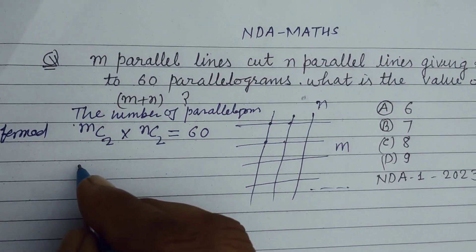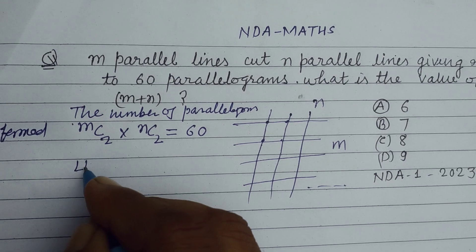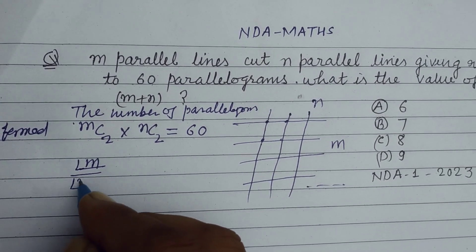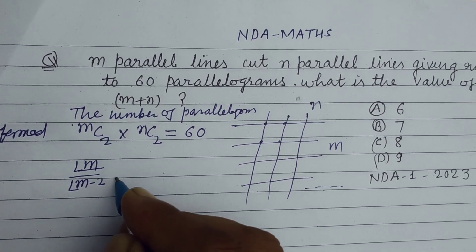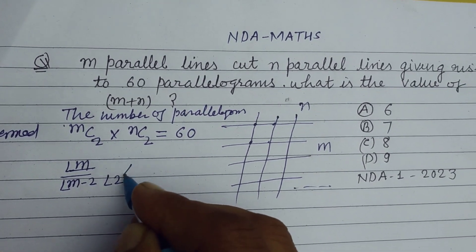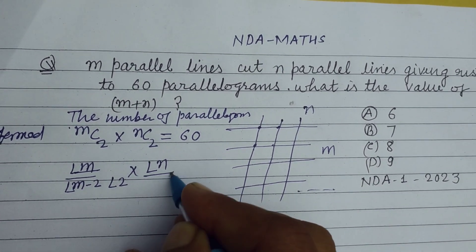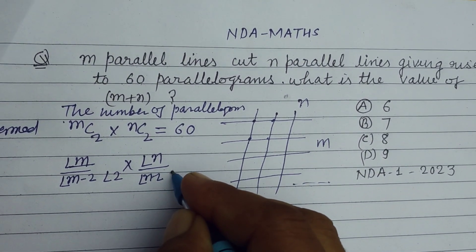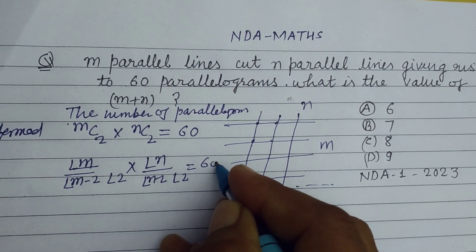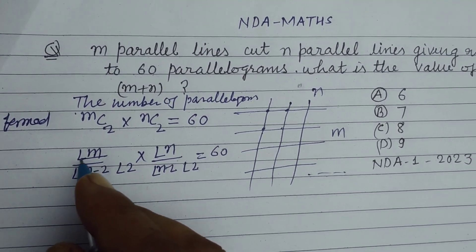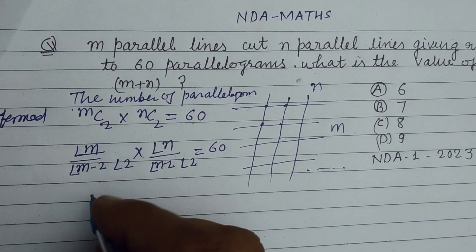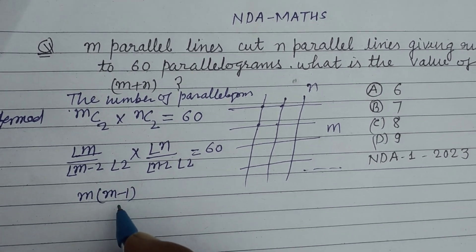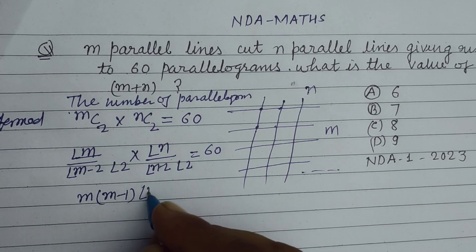This will be m factorial over m minus 2 factorial times 2 factorial, times n factorial over n minus 2 factorial times 2 factorial, equals 60. m into m minus 1, we take from the factorial, we get m into m minus 1 over 2 factorial times n into n minus 1 over 2 factorial.